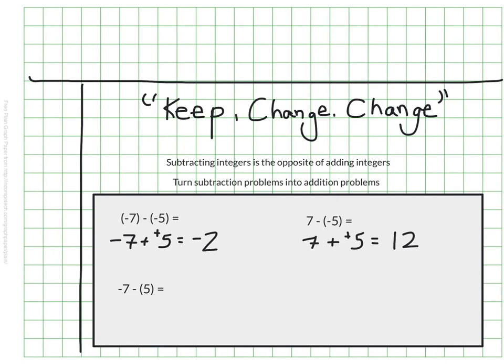Here we have negative 7 minus 5. I'm going to keep the negative 7. I'm going to change my subtraction to addition, and I'm going to change my 5 to negative 5. So now I have negative 7 plus negative 5. And of course, our work with addition tells us that would be negative 12.